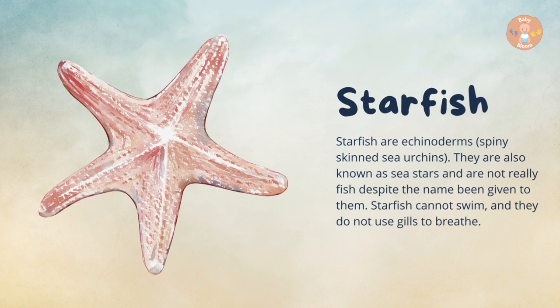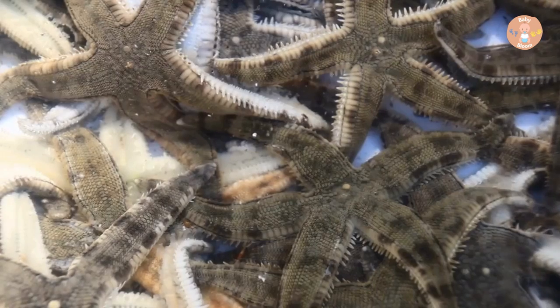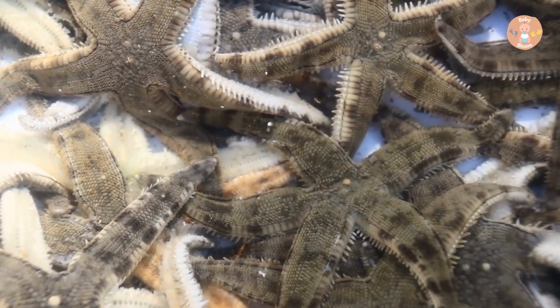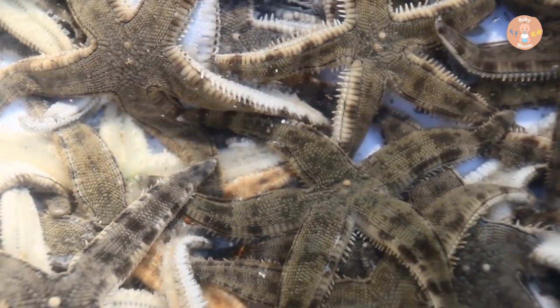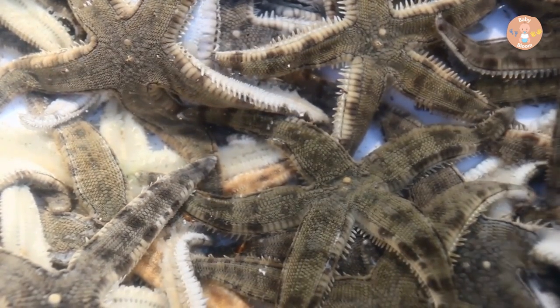Starfish. Starfish are echinoderms, spiny-skinned sea urchins. They are also known as sea stars and are not really fish despite the name given to them. Starfish cannot swim, and they do not use gills to breathe.